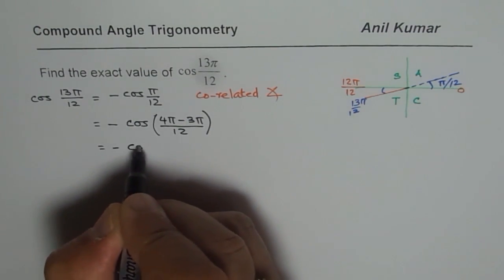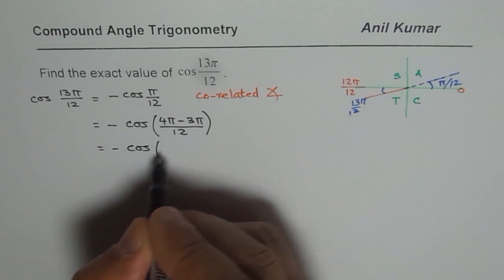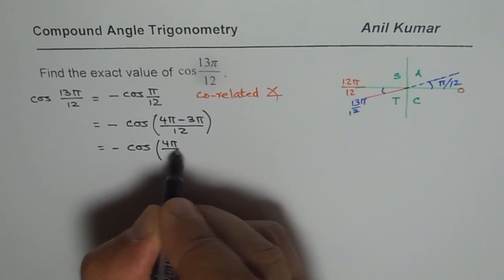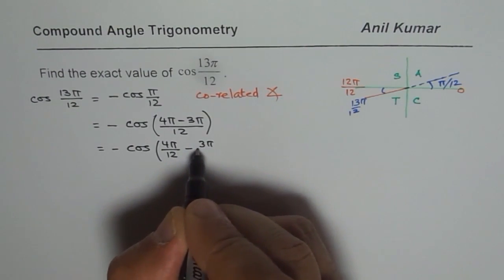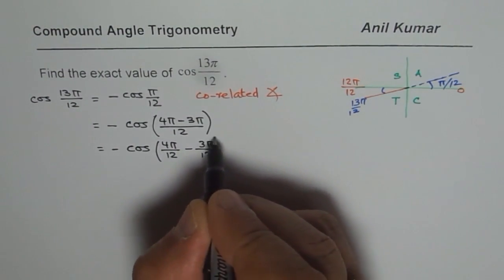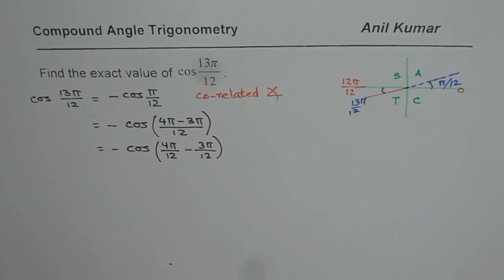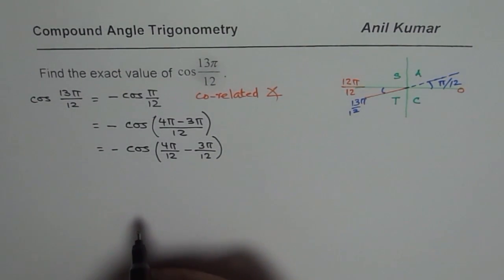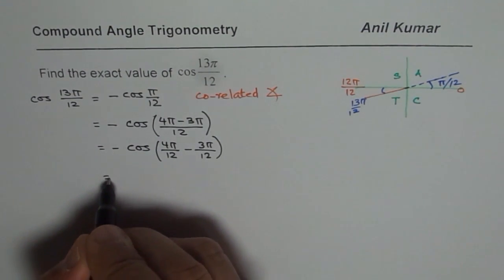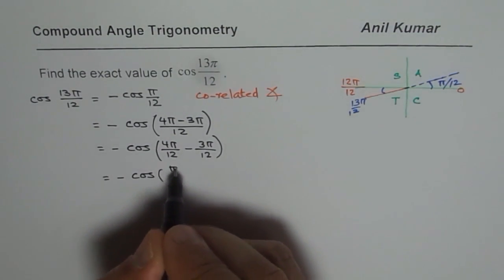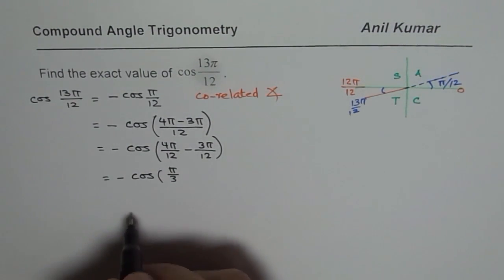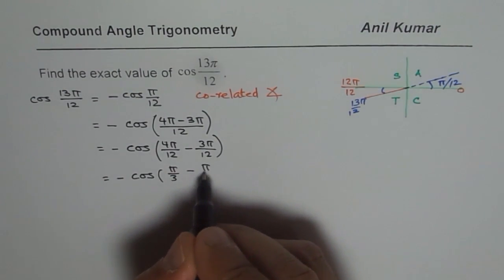And I can rewrite this as cos of 4π over 12. Normally, when you are doing it in exam, you do not have to show all these steps. But for me, so that it is clear to all my viewers on internet, it is important. So, I could write it like this or further, I could simplify this as cos of π/3 minus π/4.